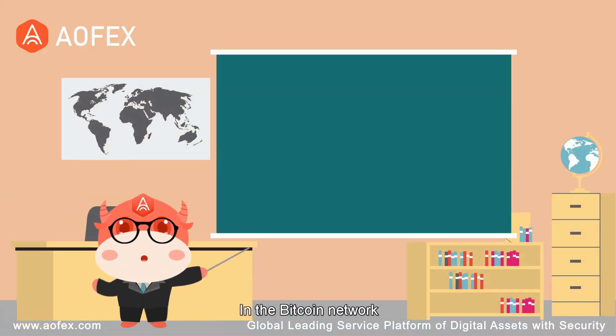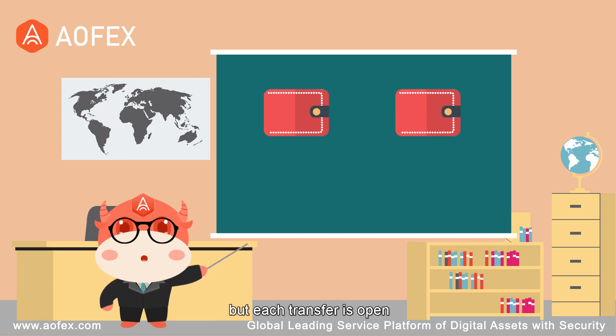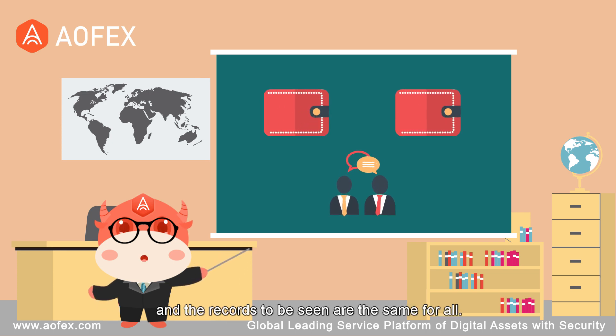In the Bitcoin network, wallet addresses can be anonymous, but each transfer is open and the records to be seen are the same for all.